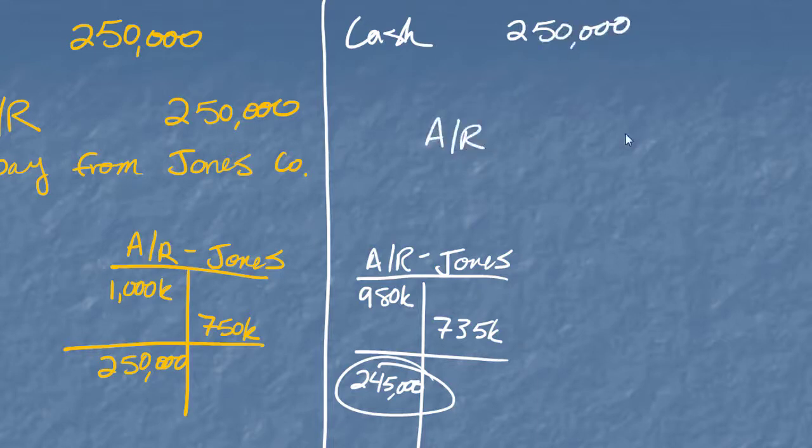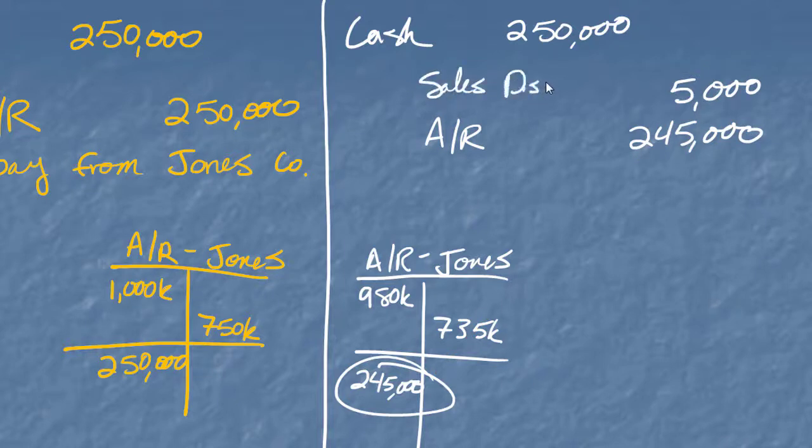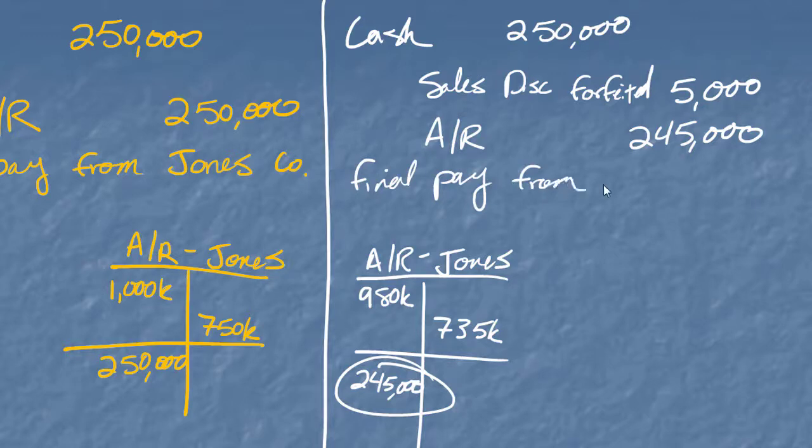Accounts receivable is going to be the $245,000, and in this case, I need a $5,000 credit, and the name here is Sales Discounts Forfeited. Kind of a weird account name, but that's what happened. We assumed they'd get the discount, and they forfeited the discount. They didn't pay in time. Final payment from Jones.